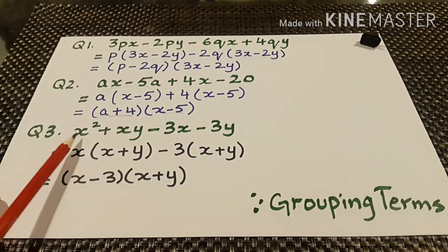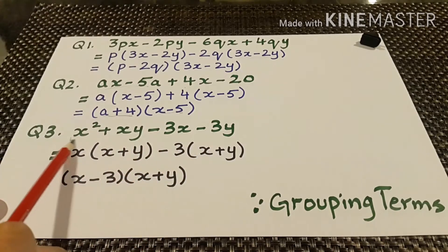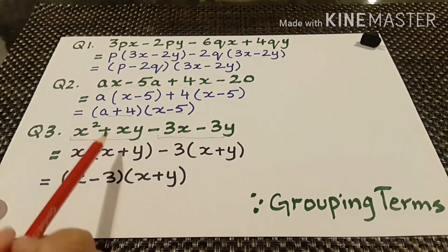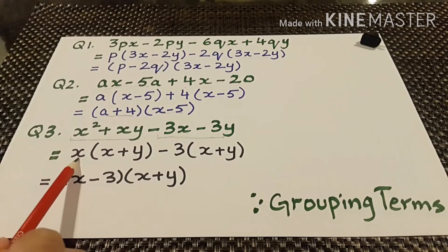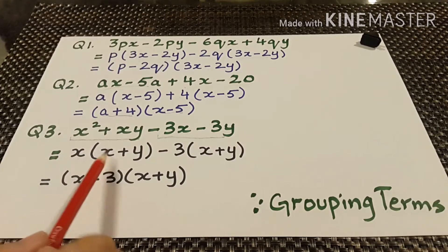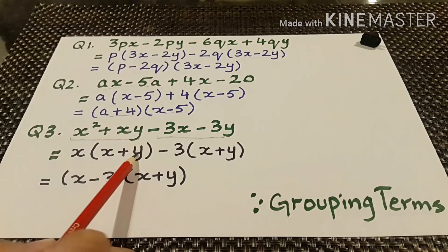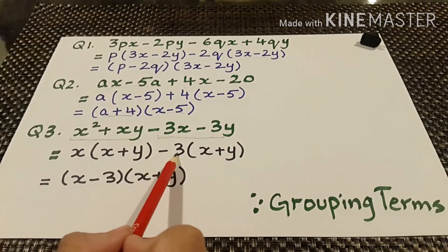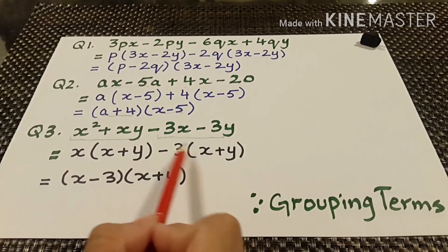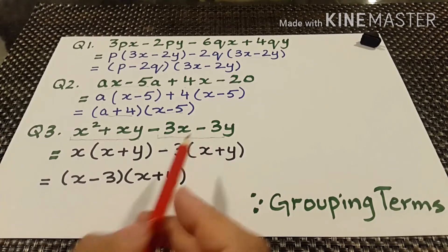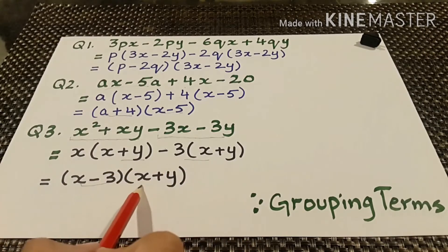Question number 3 states: x squared plus xy minus 3x minus 3y. Again we have 2 groups. From the first group we take x as common and inside we are left with x plus y. From the second group we take minus 3 as common and x plus y comes inside — the sign is plus because plus into minus is minus. So x minus 3 and x plus y is the common factor.